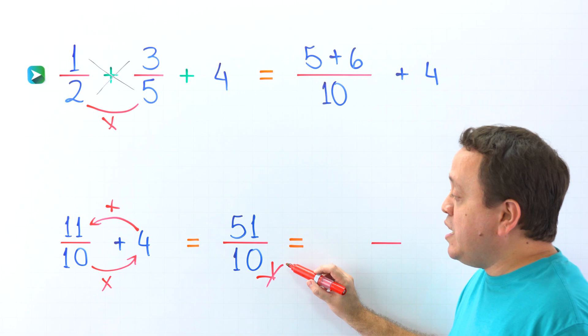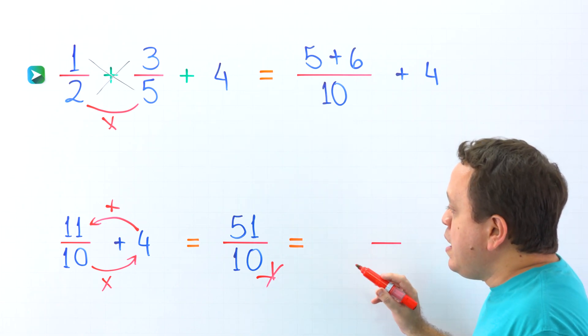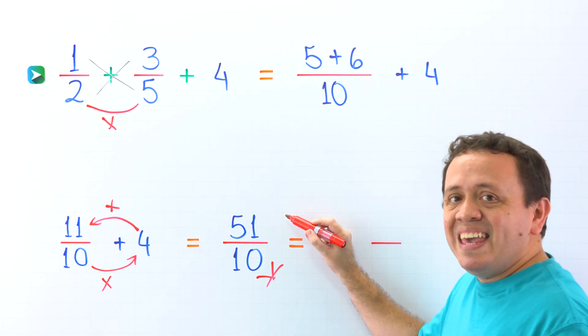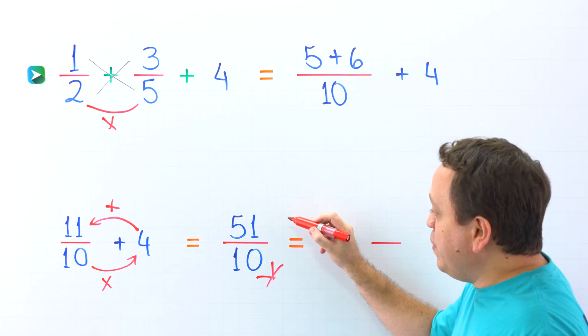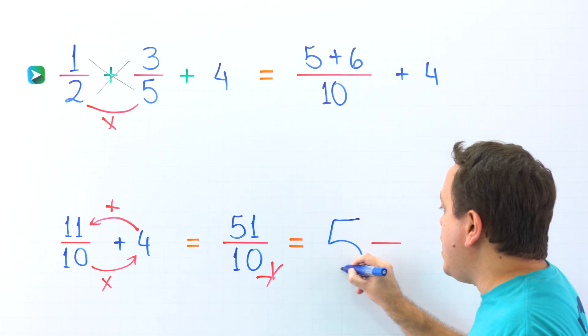And if this is an improper fraction, it means that we could convert it into a mixed number. This last step is optional, okay? So how many times does 10 go into 51? Well, 10 goes into 51 five times.